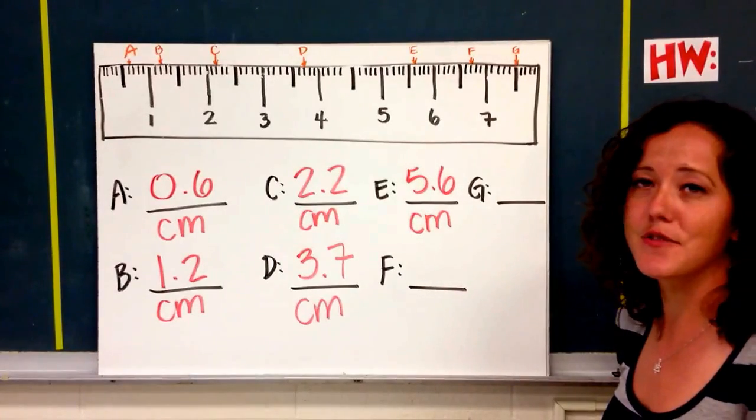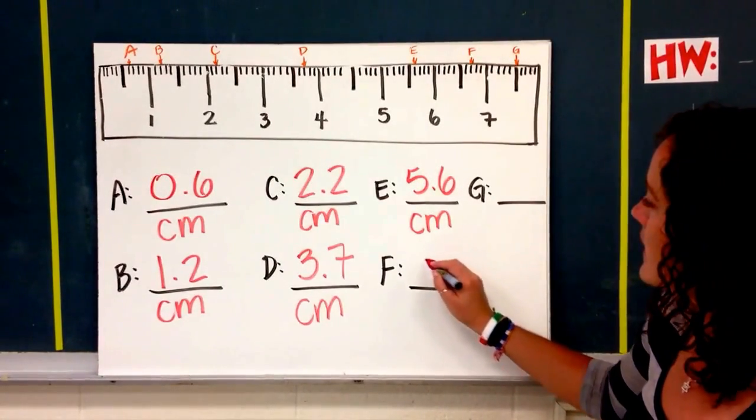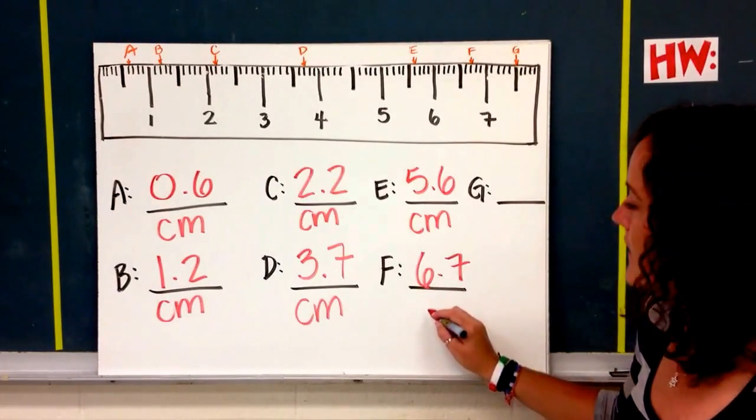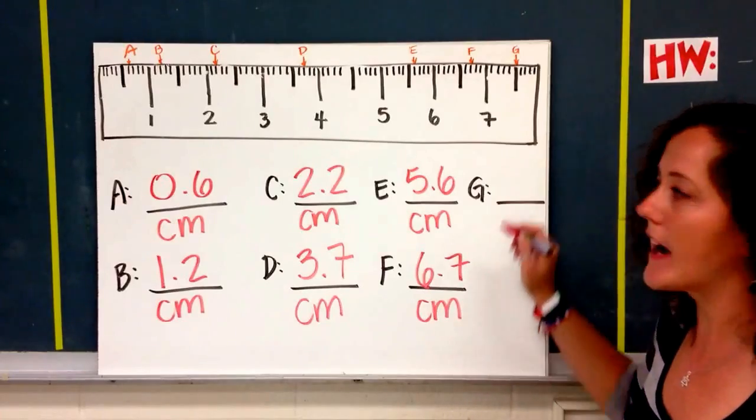So E you should have found to be 5.6 centimeters. You should find F to be 6.7, and G is 7.5.